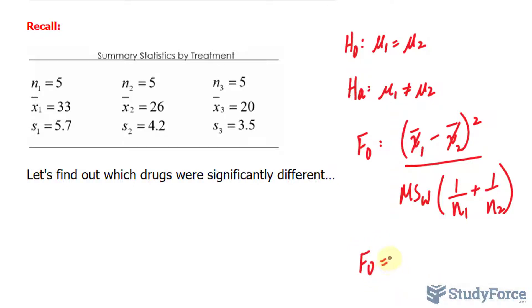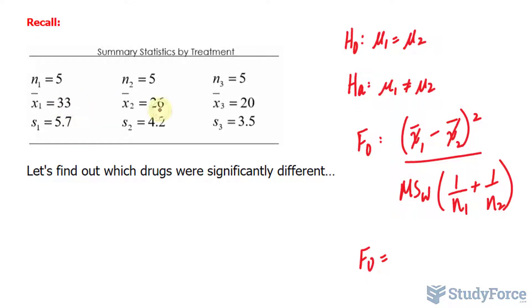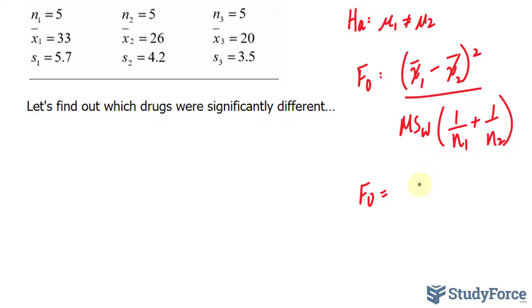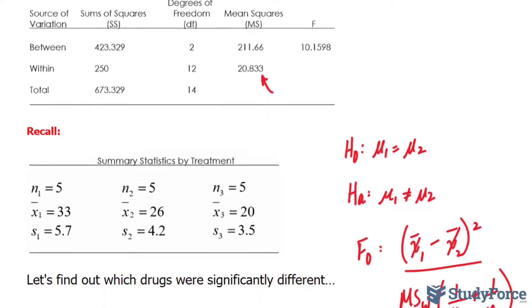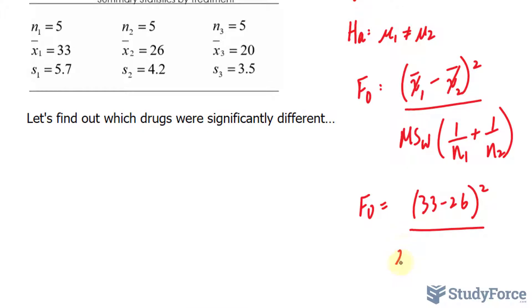Let's fill this in. F observed is equal to, we have 33 minus 26, 33 minus 26 raised to the power of 2, over the mean square within was 20.833, 1 over 5 plus 1 over 5.